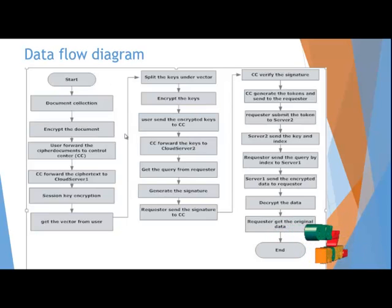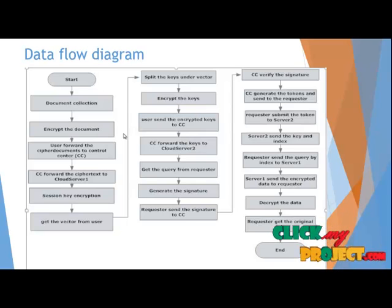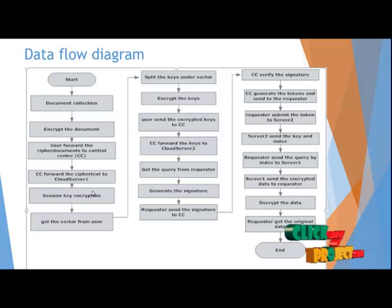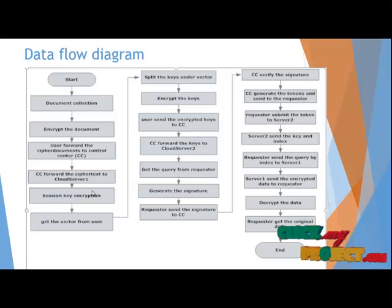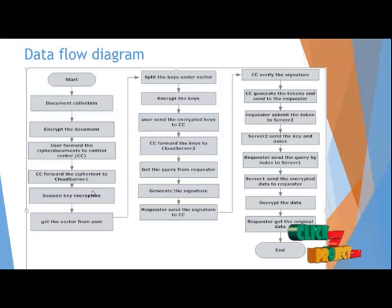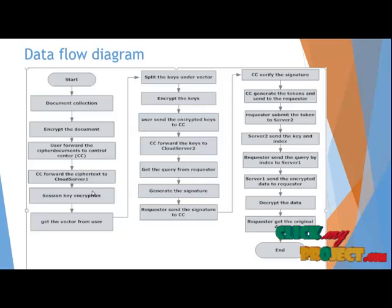Next, the Range Query Keys process: the Range Query Keys get the query from the Requestor. Then, generate the Signature using DSA Algorithm — Digital Signature Algorithm. The Signature is sent to the Control Center, which saves the Signature. Then, the Control Center generates the tokens and sends the generated tokens to the Requestor. The Requestor receives the tokens and submits them to the Cloud Center 2.